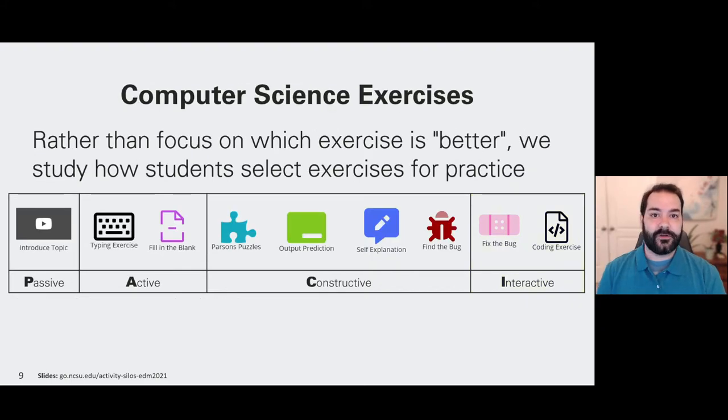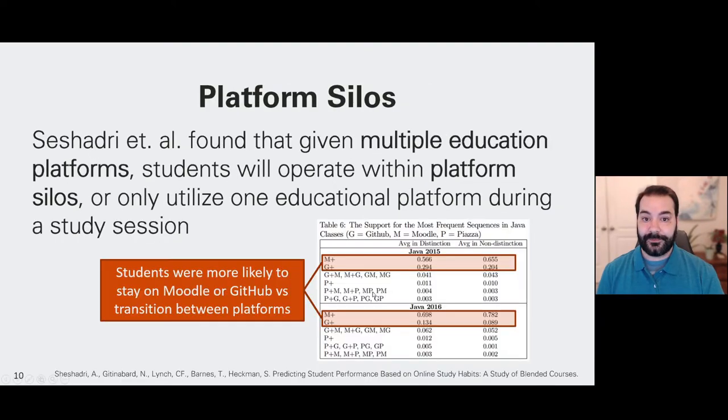Now, for our study, we're not looking at these activities and seeing which one is better than the other, but rather how when students are going to practice, how are they selecting these activities? Are they going from one to the next? And is there any sort of connection with these ICAP categories? We also want to look at platform silos. Sashadri had found that students when they were learning computer science on multiple educational platforms would focus on just one platform during any particular study session. So if you started the session on Moodle, you were most likely to stay on Moodle. If you were on GitHub, you were most likely to stay on GitHub.